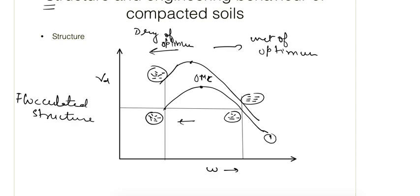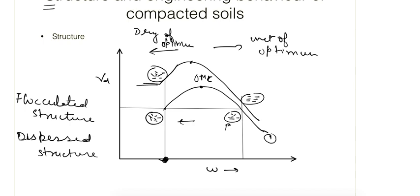And if the soil is compacted on the wet side of optimum, then it will have a more dispersed structure. If we talk about constant water content and the compactive effort is increased — this curve corresponds to the greater compactive effort — then it produces a more dispersed structure.